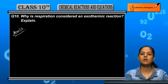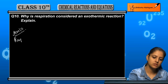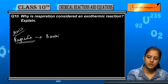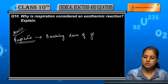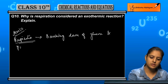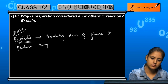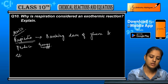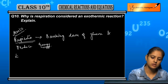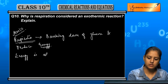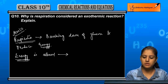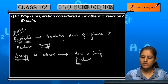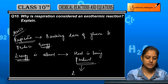Exothermic reaction means that heat is evolved — it is given out. When we talk about respiration, it involves the breaking down of glucose to produce energy. When respiration is occurring, energy is released, which means that heat is being produced. And if heat is produced, that means it is an exothermic reaction.